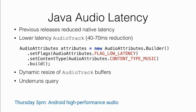The audio team has been working hard to reduce audio latency. Most previous work was done at the native level; in N, they worked on reducing latency in the upper levels. Depending on your device, you can expect a 40 to 70 millisecond latency reduction when playing audio. It's easy to enable: when you create AudioAttributes for your media player, just set the FLAG_LOW_LATENCY flag. There are also new APIs to count the number of underruns that happen during playback and dynamically resize your buffers when there are too many. Go to the talk on Thursday at 3 p.m. to learn more about the native APIs.